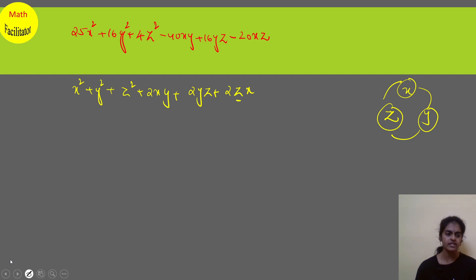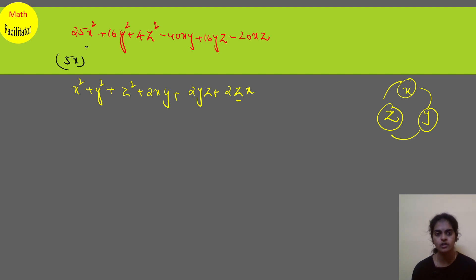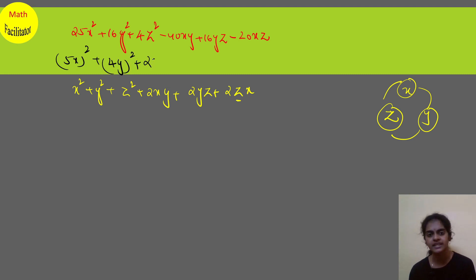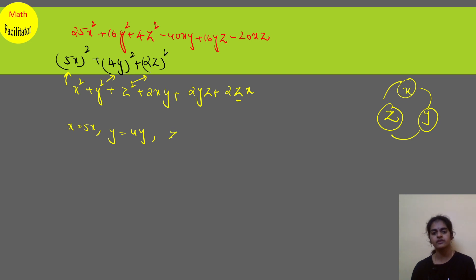Comparing the terms: in the place of x you have 25x squared, which is 5x whole square. 16y squared is 4y whole square, and 4z squared is 2z whole square. So in the place of x you have 5x, in the place of y you have 4y, and in the place of z you have 2z.